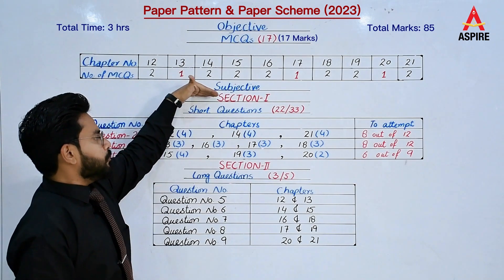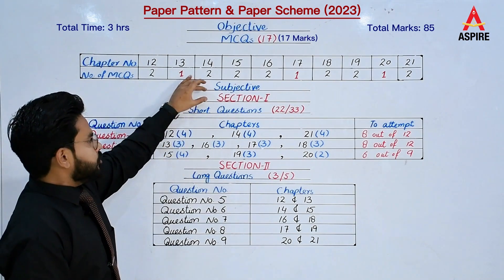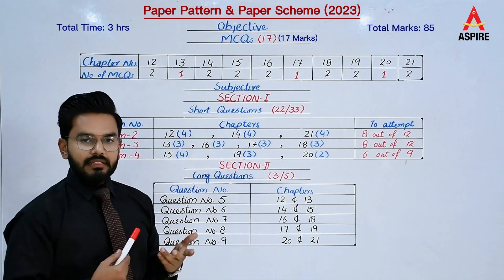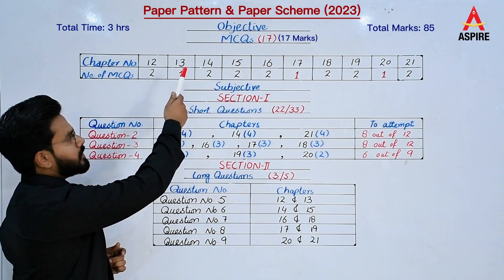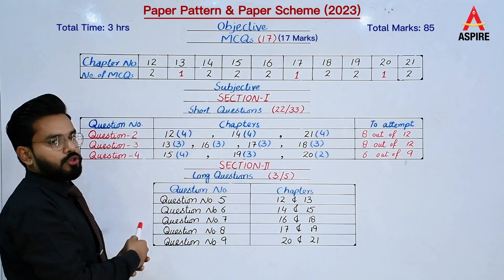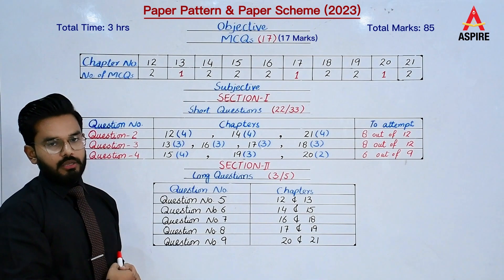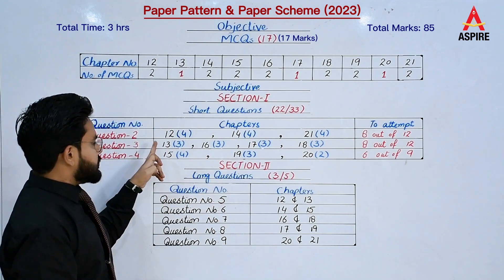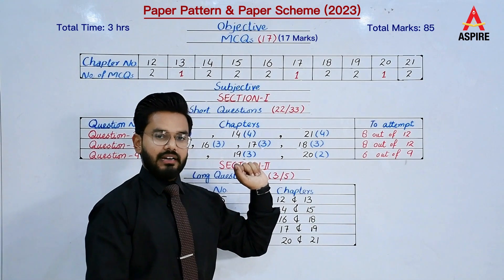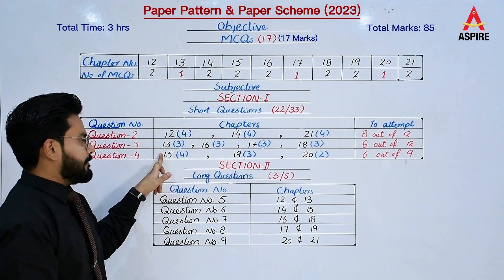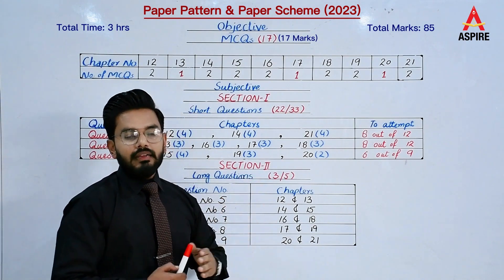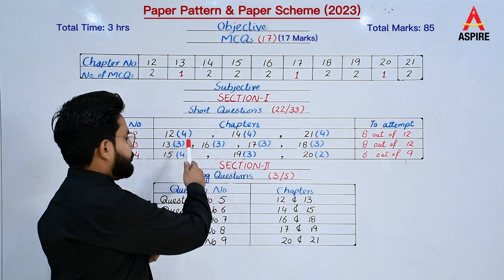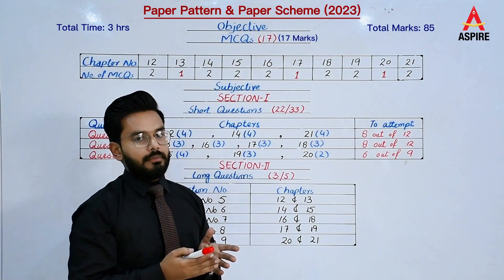Now let's see the subjective portion. We have two sections. Section number 1 is short questions. We have a total of 33 short questions, out of which you have to attempt 23. The short questions are in question number 2, 3, and 4. Question number 2 covers chapters 12, 14, and 21, with 4 questions each — total 12 — and you attempt 8.